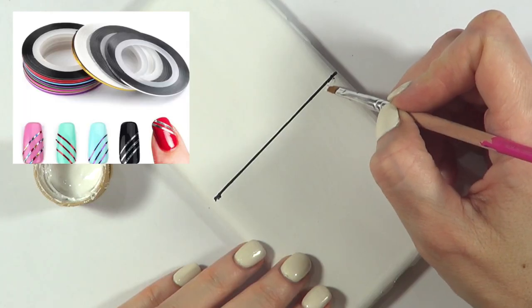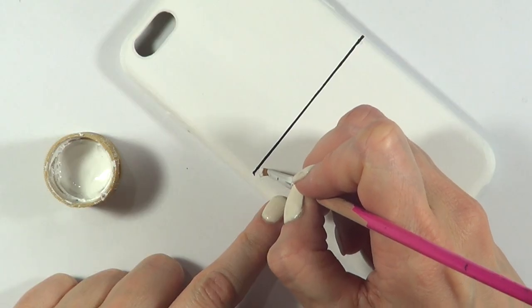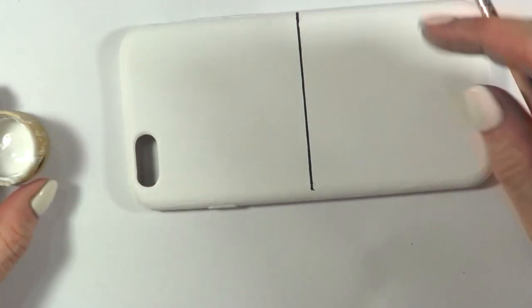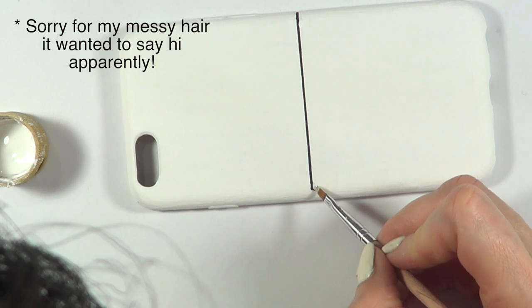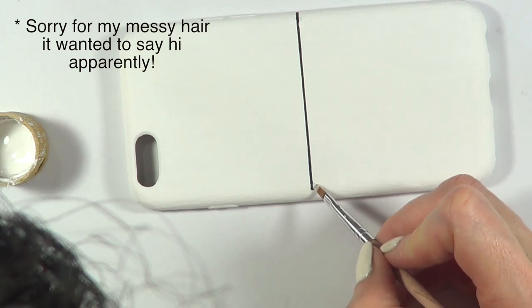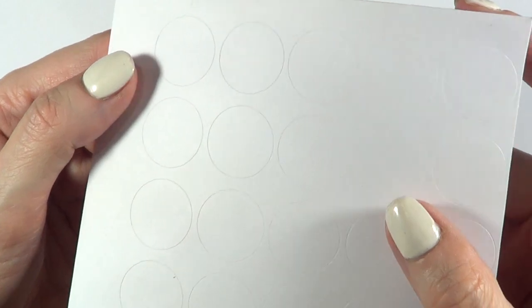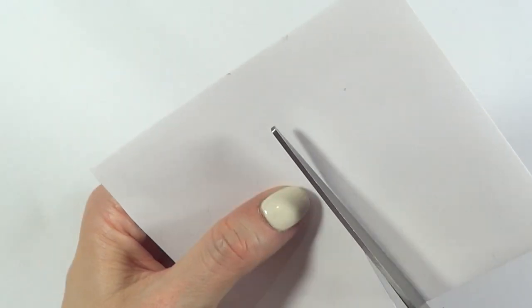Or you can use striping tape for nail art if you have it. This also happens with painter's tape as well. When you remove the tape sometimes you have stuff that goes all around the line. Just use the same white acrylic paint to erase those things with a brush. Then I'm going to be using these round sticky labels.